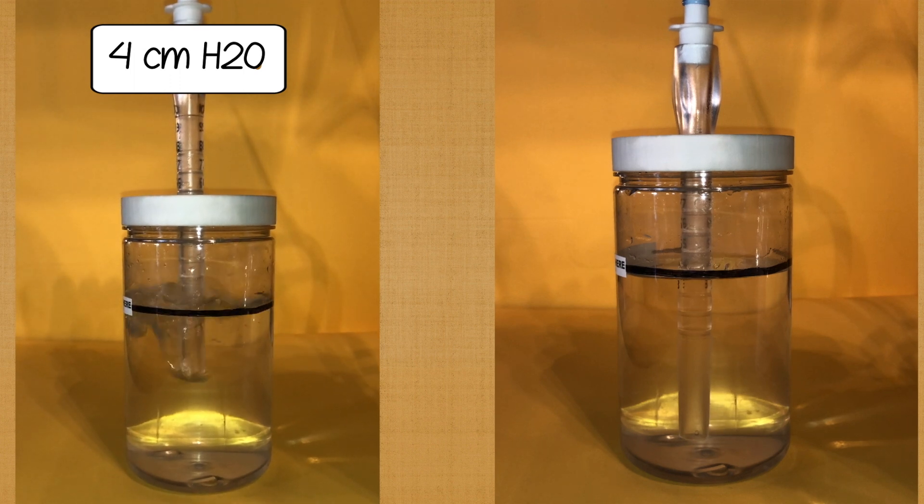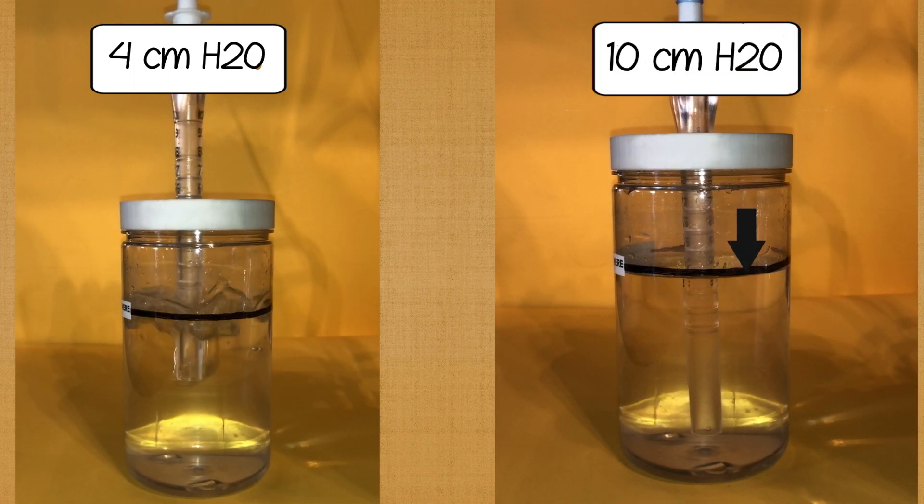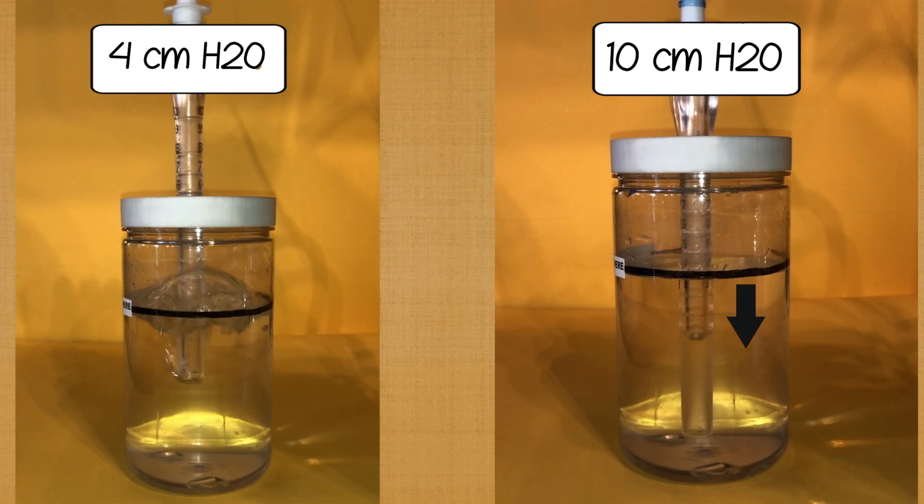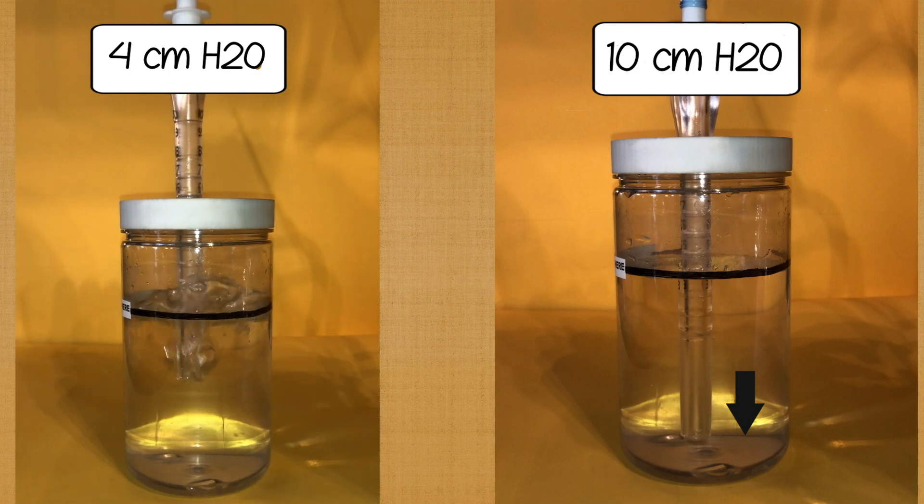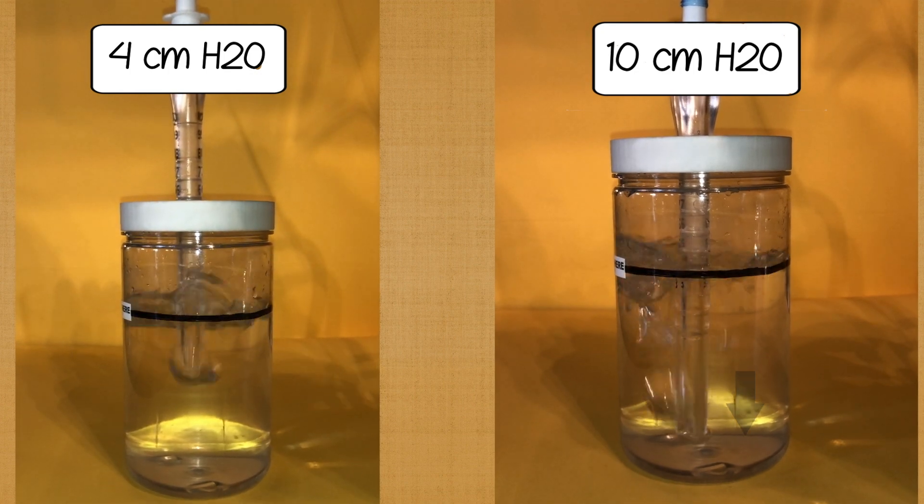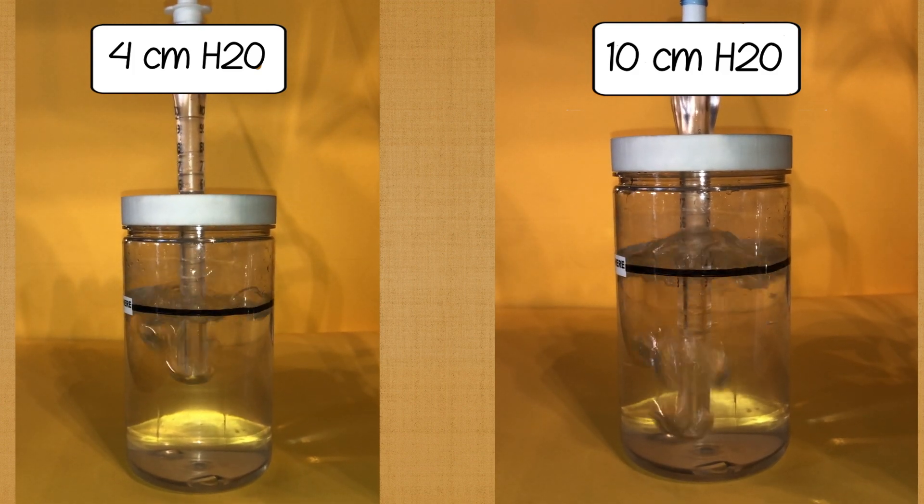But when the wand is immersed in 10 centimeters of water, the gas needs to build up more positive pressure to bubble out. It will require a pressure of 10 centimeters H2O to press the water down far enough to let the gas escape in the form of bubbles. In other words, the more immersed the wand is, the more pressure builds up inside the lungs of the patient.